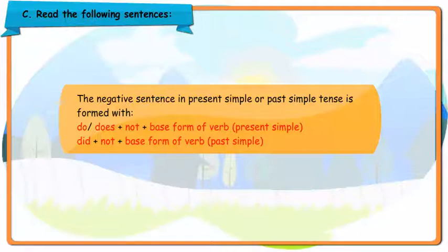The negative sentence in present simple or past simple tense is formed with: do or does plus not plus base form of verb — present simple. Did plus not plus base form of verb — past simple.